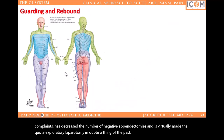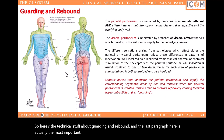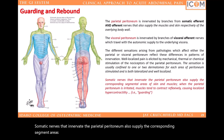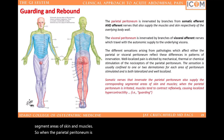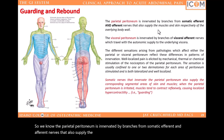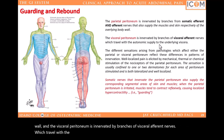Here's the technical stuff about guarding and rebound — the last paragraph here is actually the most important. Somatic nerves that innervate the parietal peritoneum also supply the corresponding segment areas of skin and muscles. So when the parietal peritoneum is irritated, muscles tend to contract reflexively, causing localized hypercontractility, otherwise known as guarding. The parietal peritoneum is innervated by branches from somatic efferent and afferent nerves that also supply the muscles and skin of the overlying abdominal wall, and the visceral peritoneum is innervated by branches of visceral afferent nerves which travel with the autonomic supply to the underlying viscera. Make sure you understand this before you move on.